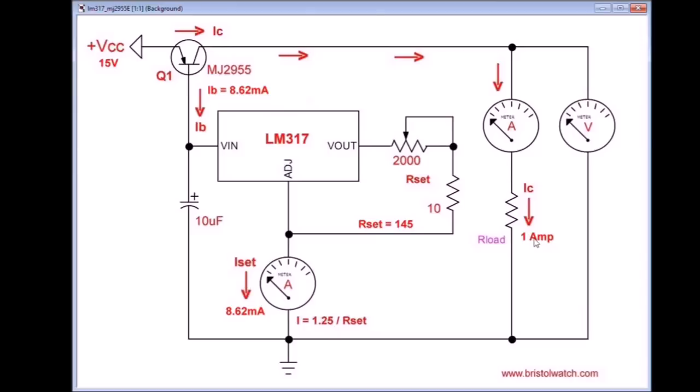Now, if I wanted to adjust my current for, say, a tenth of an amp, a tenth of an amp times 20 ohms is going to be 2 volts, then that's going to work fine.